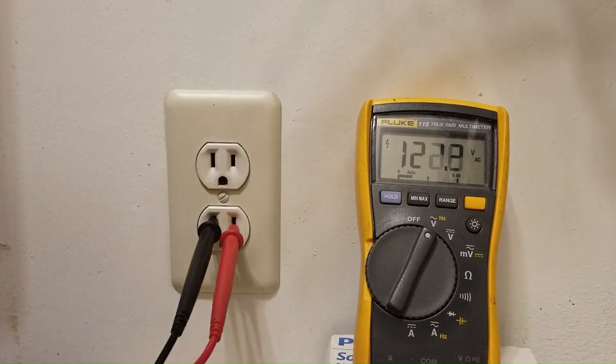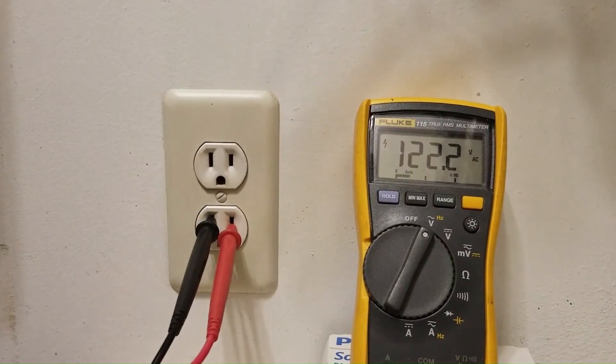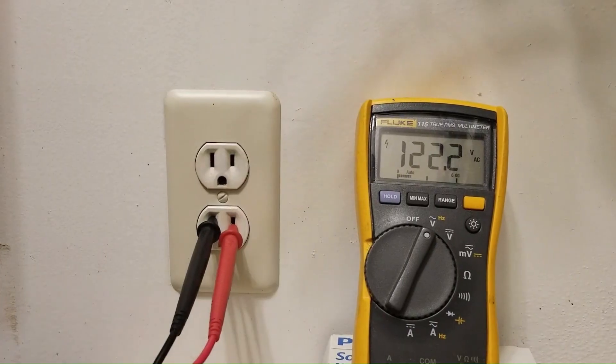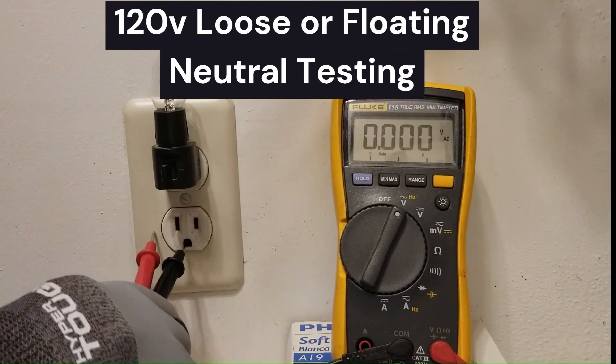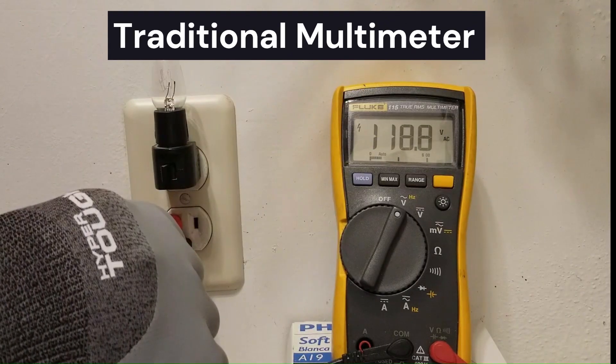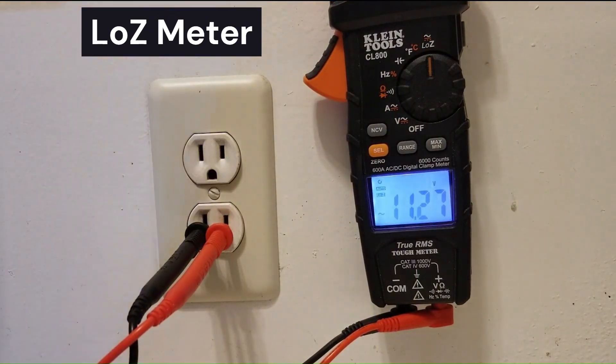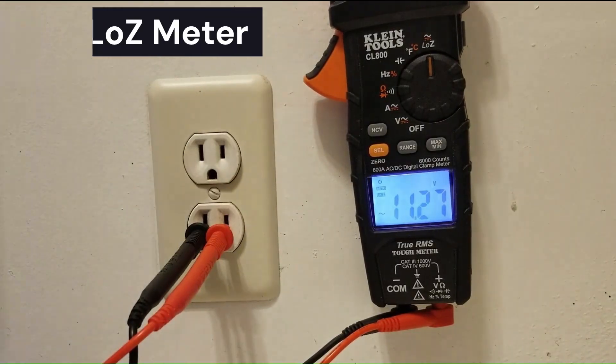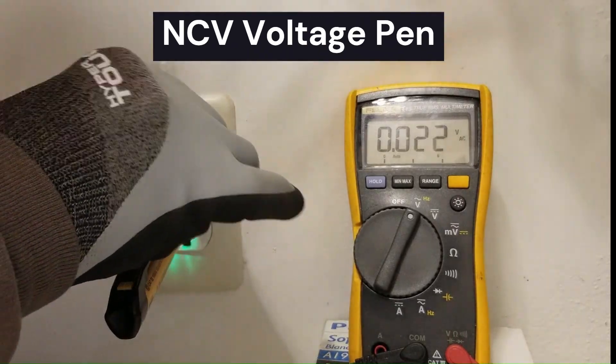When I pull the light bulb out, it goes back up to 122 volts. So why is that? In this video, I'll show you how to test for a loose or floating neutral using a traditional volt meter, a low Z meter, and a non-contact voltage pen.